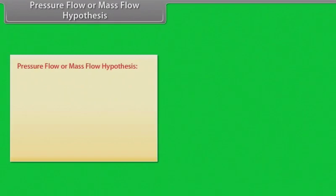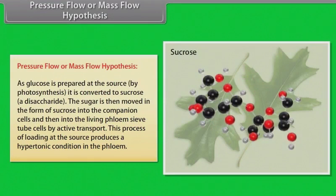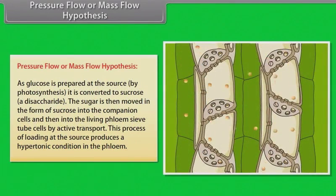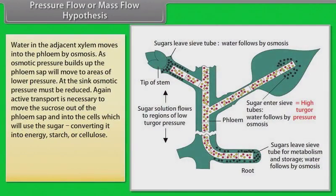Pressure flow or mass flow hypothesis is the accepted mechanism used for the translocation of sugars from source to sink. Glucose is prepared at the source by photosynthesis and is converted to sucrose. The sugar is then moved in the form of sucrose into the companion cells and then into the living phloem sieve tube cells by active transport. This process of loading at the source produces a hypertonic condition in the phloem. Water in the adjacent xylem moves into the phloem by osmosis, and an osmotic pressure builds up; the phloem sap will then move to an area of lower pressure.